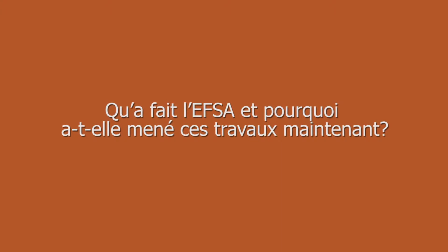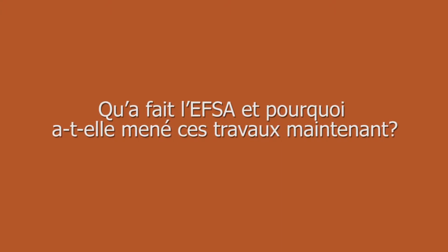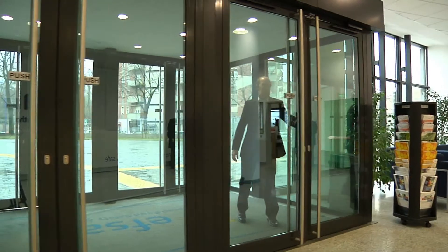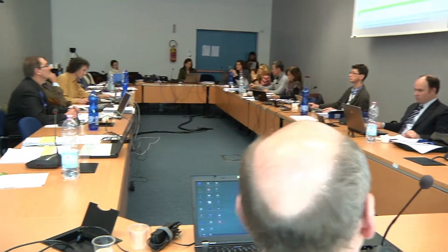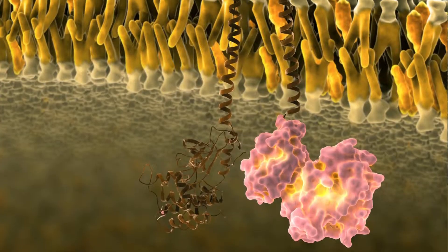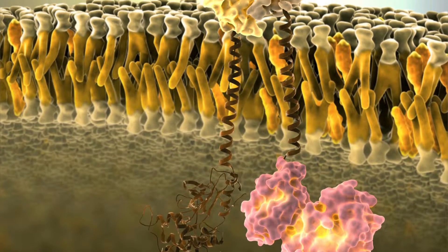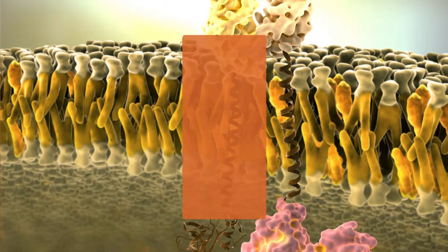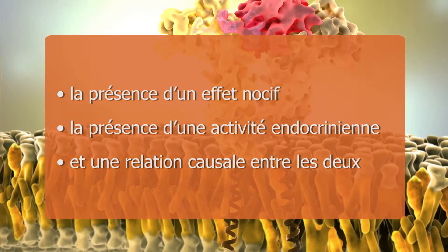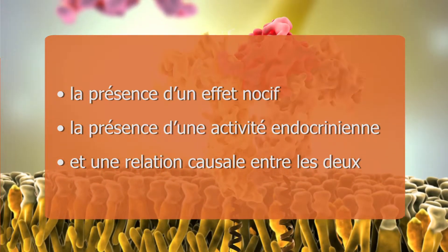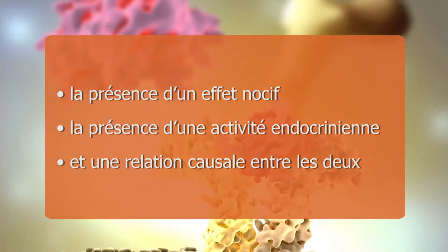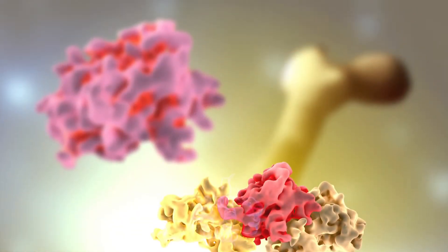EFSA's opinion establishes scientific criteria for identifying the hazards of endocrine active substances and assesses current testing methods for this purpose. We endorse the World Health Organisation definition that an endocrine disruptor is defined by three criteria: the presence of an adverse effect, the presence of endocrine activity, and a causal relationship between the two — in other words, that the endocrine activity leads to an adverse effect.